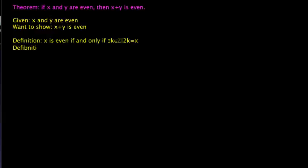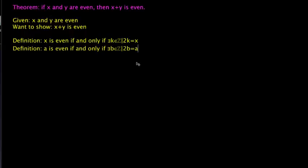We can rewrite the definition using any letters we want, as long as the letters stay in the same places. For example, a is even if and only if there exists a b in the integers such that 2b equals a. We've substituted b in place of k and a in place of x everywhere. We'll put a line through the old definition to show we're using this alternative one instead.